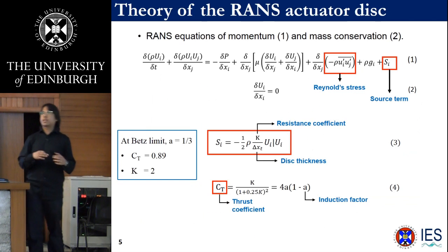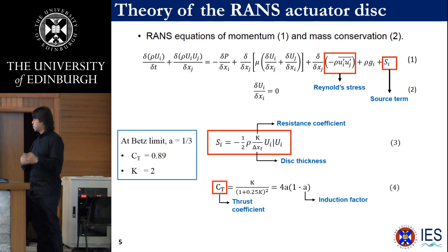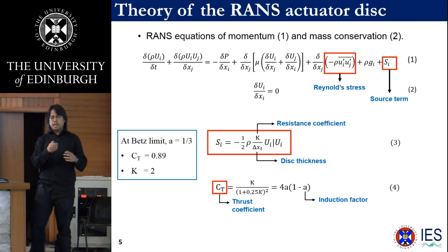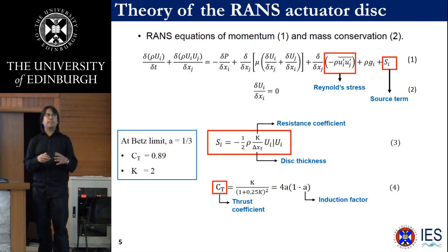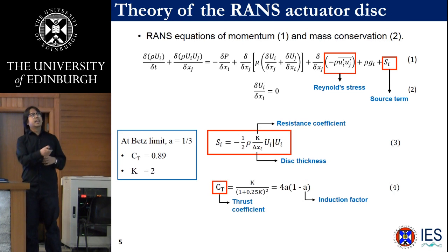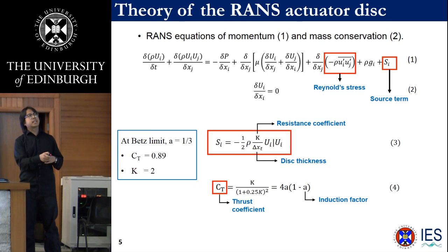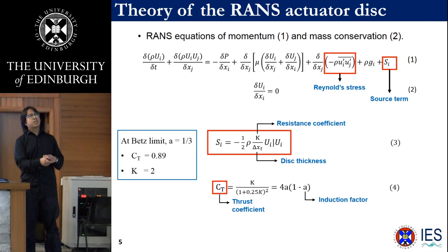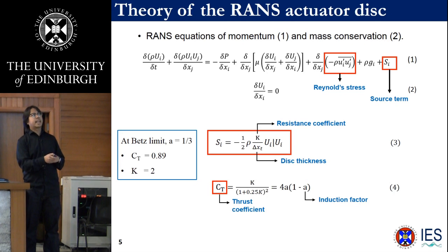This study was conducted using the Telemac 3D software, which is open source. The approximate forces applied by the turbine into the domain are calculated using an additional source term within the RANS equation of momentum and mass conservation. The source term S_i can be computed using an equation where K is the resistance coefficient and delta_x_t is the distance of interest. To calculate K, another equation is used where, at the Betz limit, the thrust coefficient CT reaches approximately 0.89, giving K equals 2.